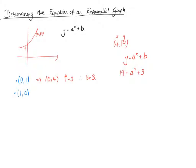So we take away 3 from both sides, and we get 16 equals a to the 4. So a is the fourth root of 16, which is 2. Therefore, we can say that graph has the equation y equals 2^x plus 3.